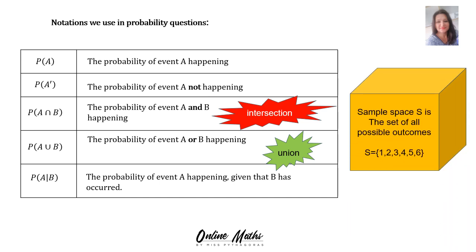In a dice, the sample space S is the set of all possible outcomes. S is equal to {1, 2, 3, 4, 5, 6} for that. So the sample space for a dice is that.